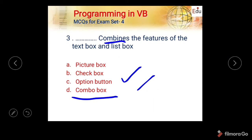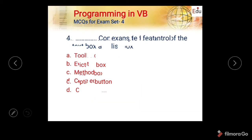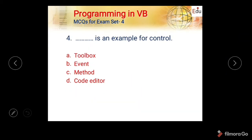Fourth question: Dash is an example of a control. Options are: toolbox, event, method, and code editor. The right answer is toolbox — toolbox is an example of a control.